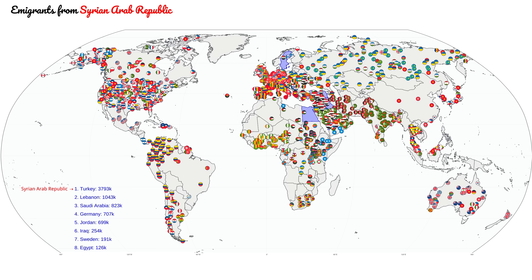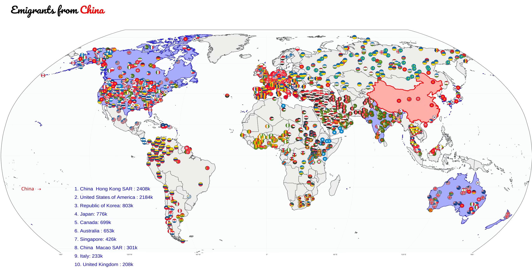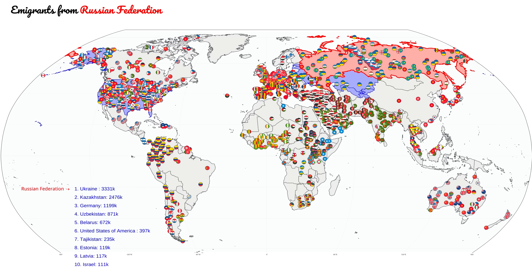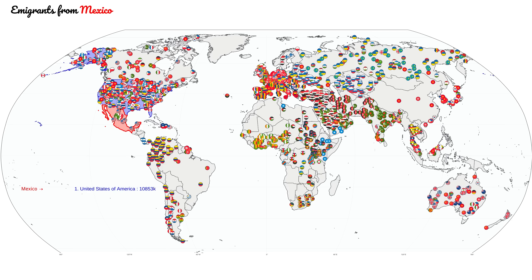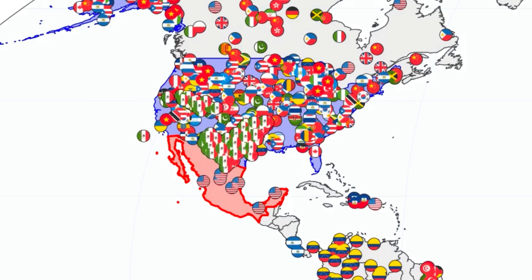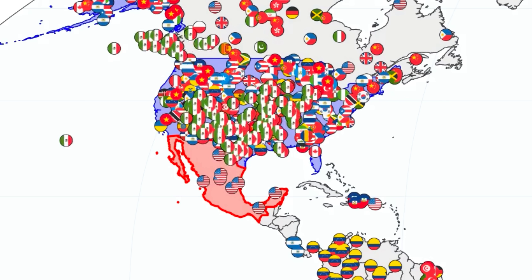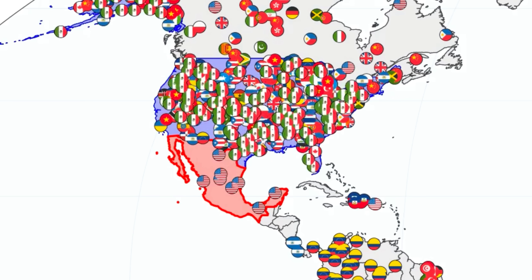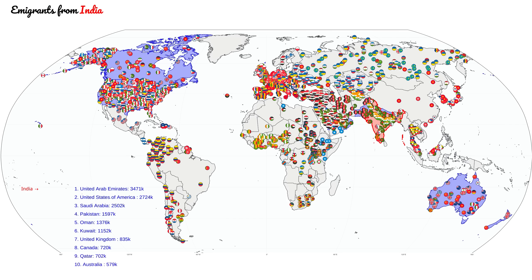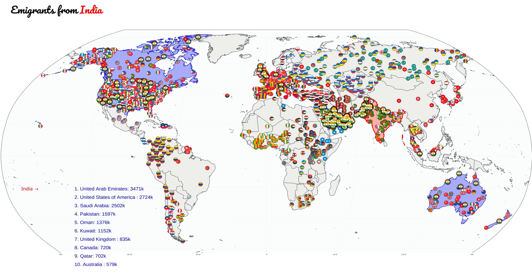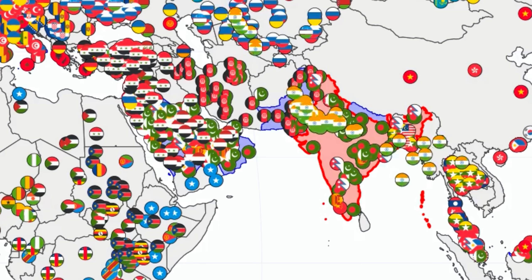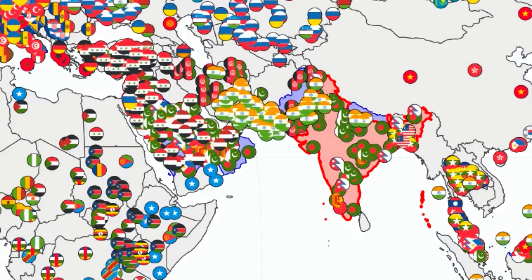Number 5 is Syria, from which millions fled during the civil war. At number 4 is China, the world's most populous country, and in place 3 is Russia, another huge country with a shrinking population. At number 2 we have Mexico, which is really interesting because it has huge emigration but it's almost all to one country — the United States. And in first place we have India, the second most populous country in the world, with huge emigration to the United States and the Middle East.